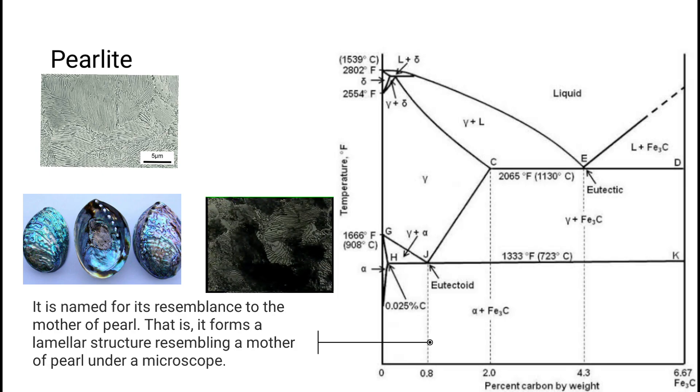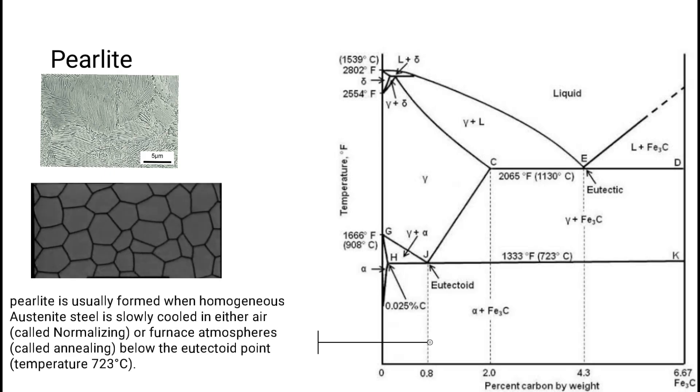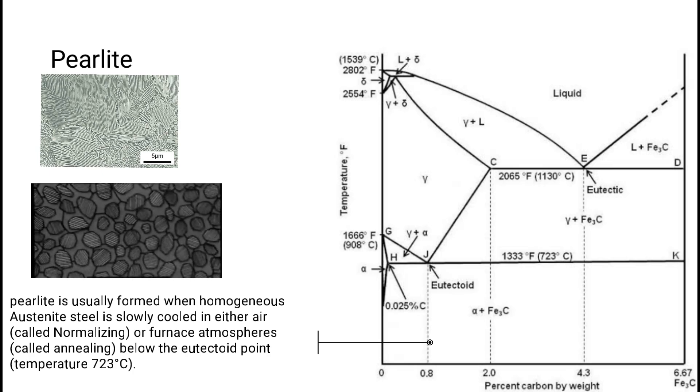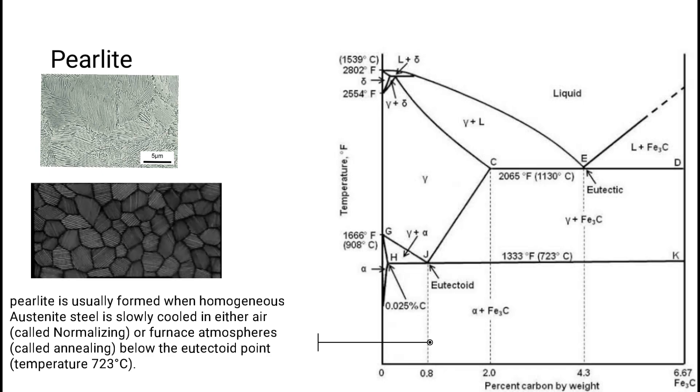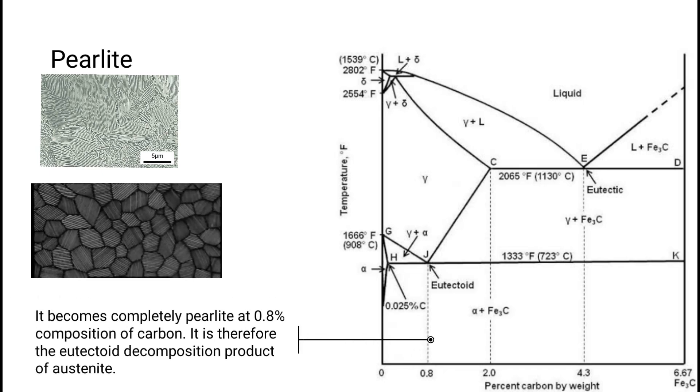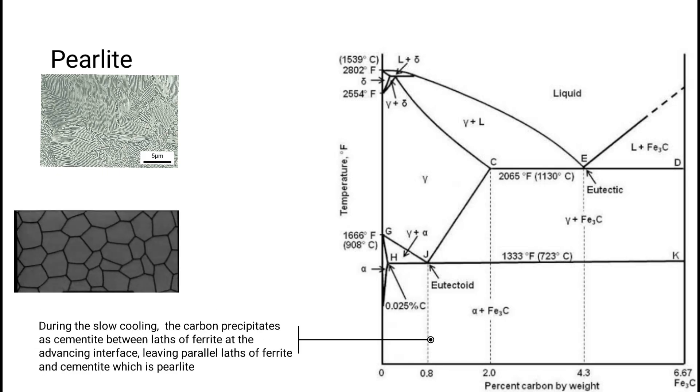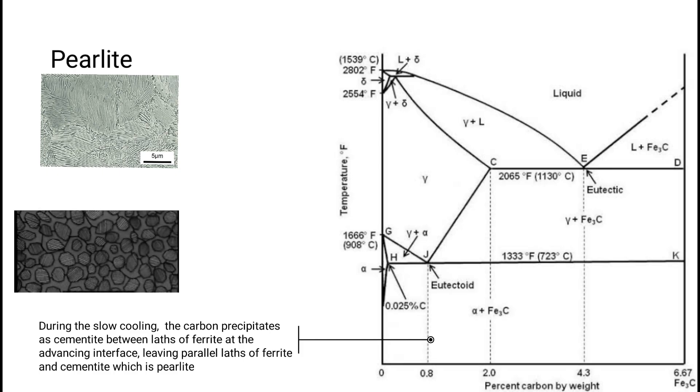Perlite is usually formed when homogeneous austenite steel is slowly cooled in either air, called normalizing, or furnace atmospheres, called annealing, below the eutectoid point temperature, 723 degrees Celsius. It becomes completely perlite at 0.8 percent composition of carbon. It is therefore the eutectoid decomposition product of austenite. During slow cooling, the carbon precipitates as cementite between laths of ferrite at the advancing interface, leaving parallel laths of ferrite and cementite, which is perlite.